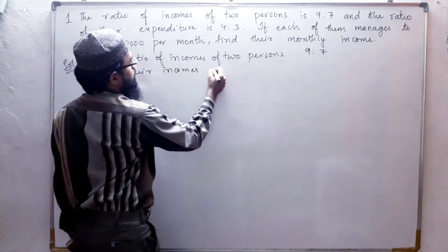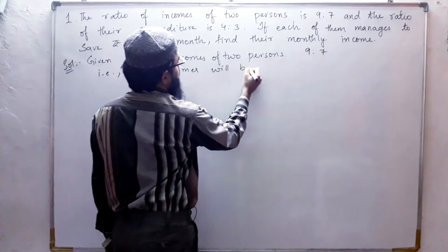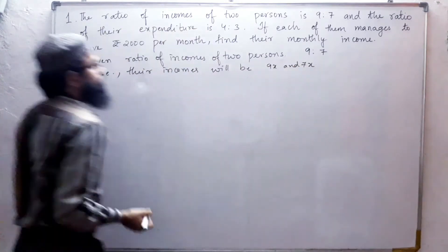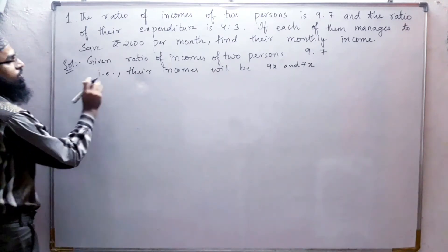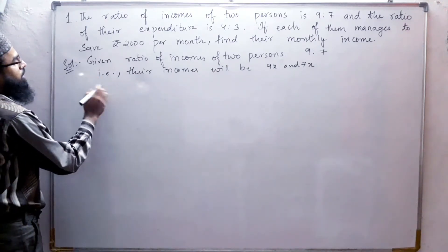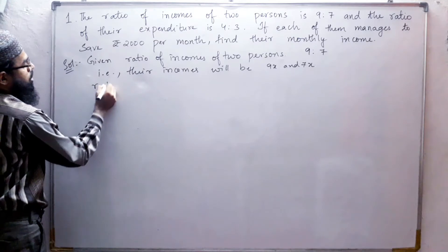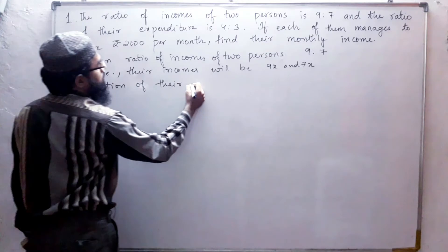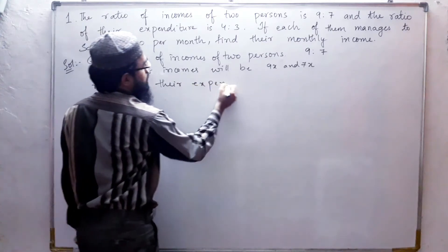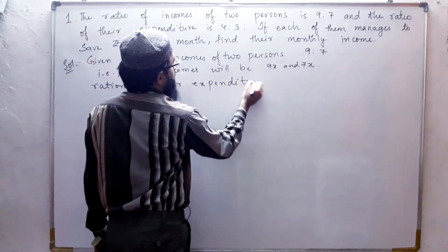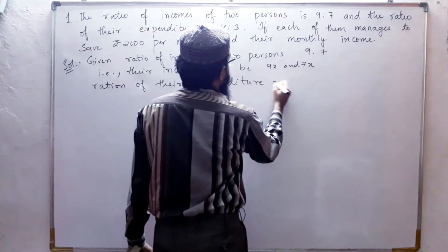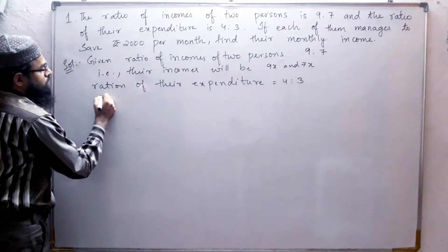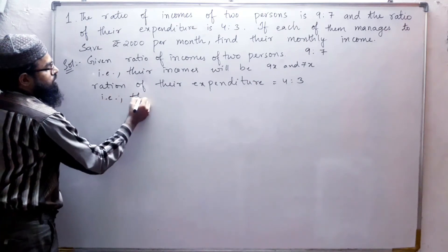And next they have given the ratio of their expenditures, 4 to 3.